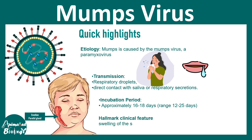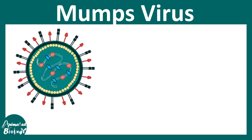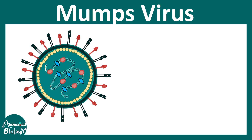The hallmark of this infection is swelling of the salivary glands, mostly the parotid glands, and that too in an asymmetric manner — meaning one side of the parotid glands would be swollen. Let us look at the virus and understand its different components. This is an enveloped virus which has a nucleocapsid protein.